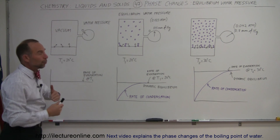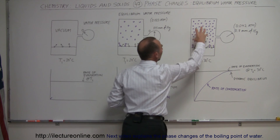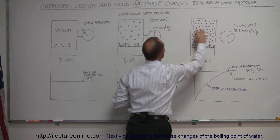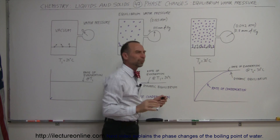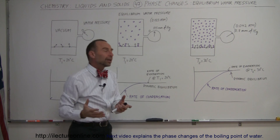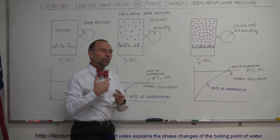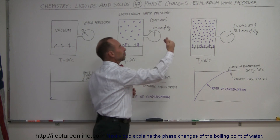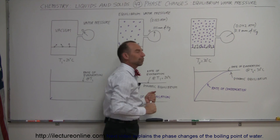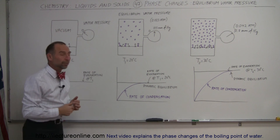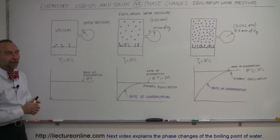When we reach dynamic equilibrium, we call the pressure inside the equilibrium vapor pressure. Normally we just say vapor pressure, but that indicates we've reached the maximum pressure you can have at a particular temperature for the water — and that's called the equilibrium vapor pressure.